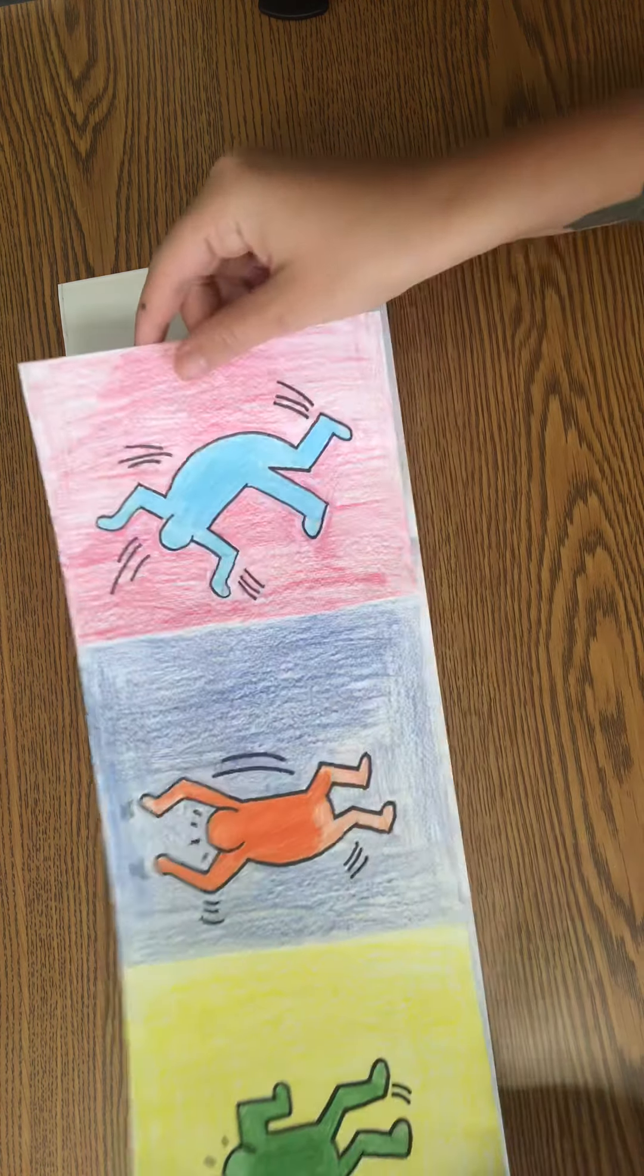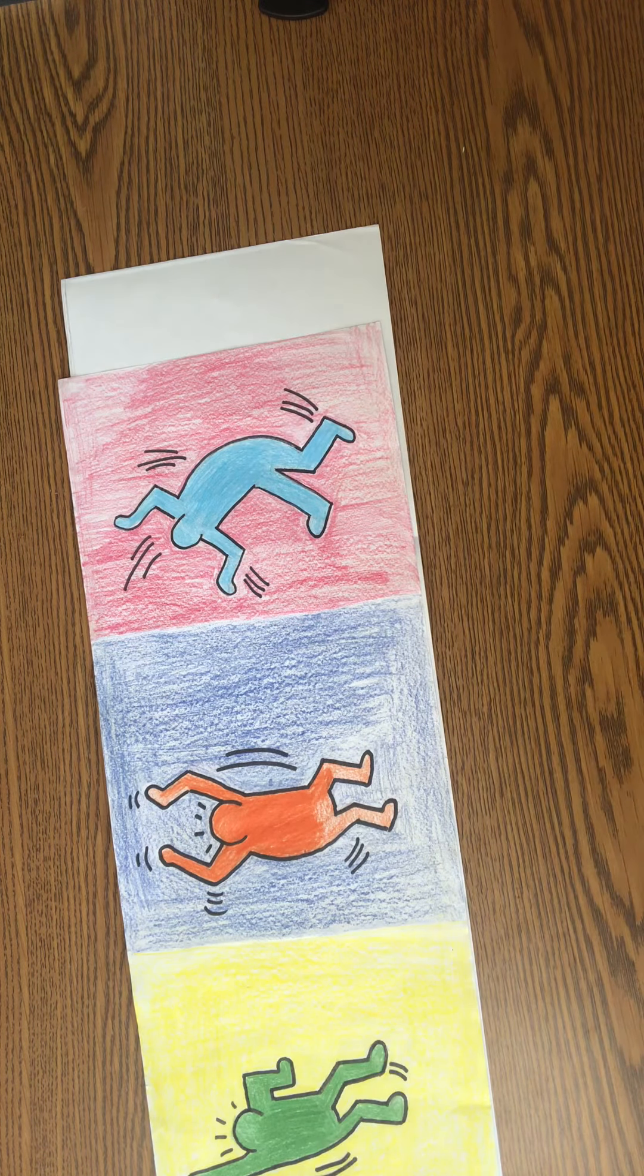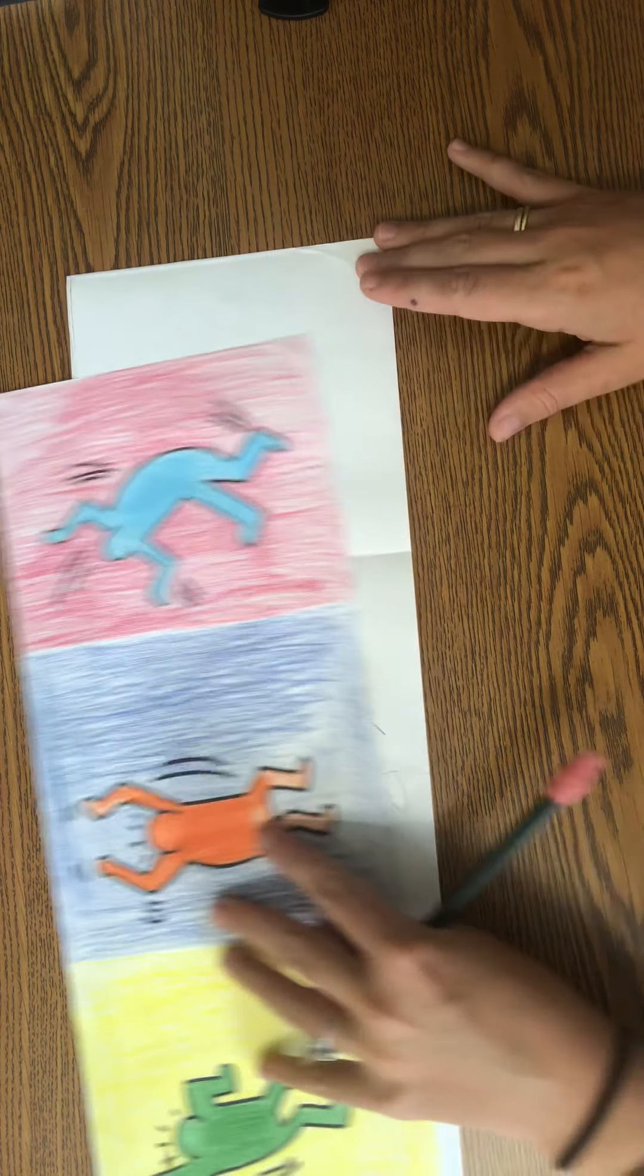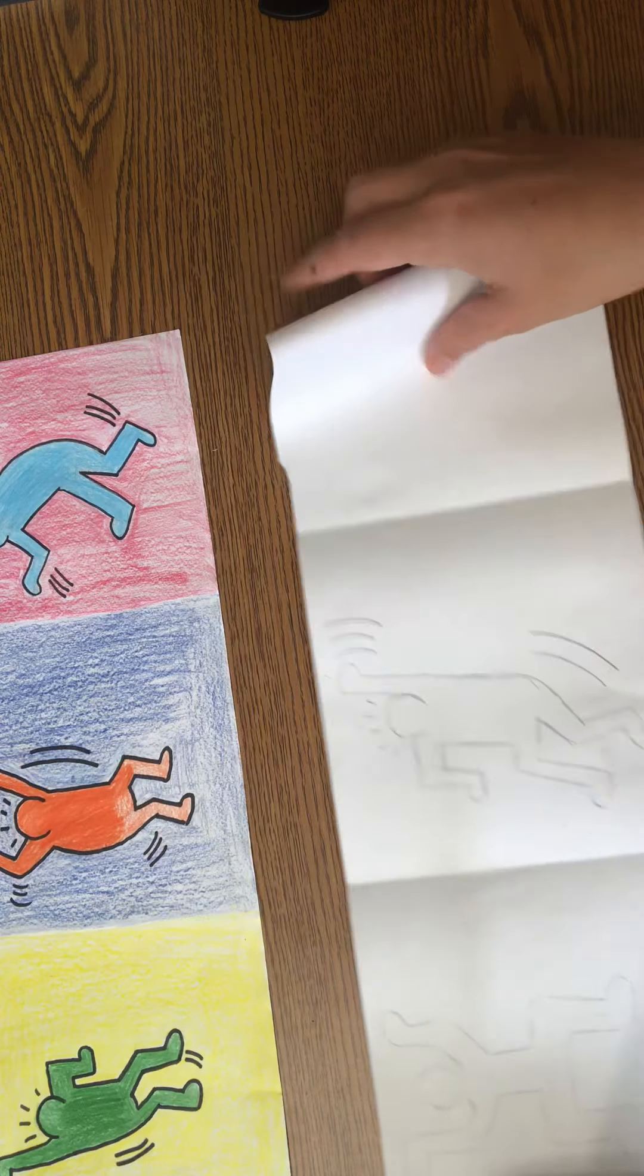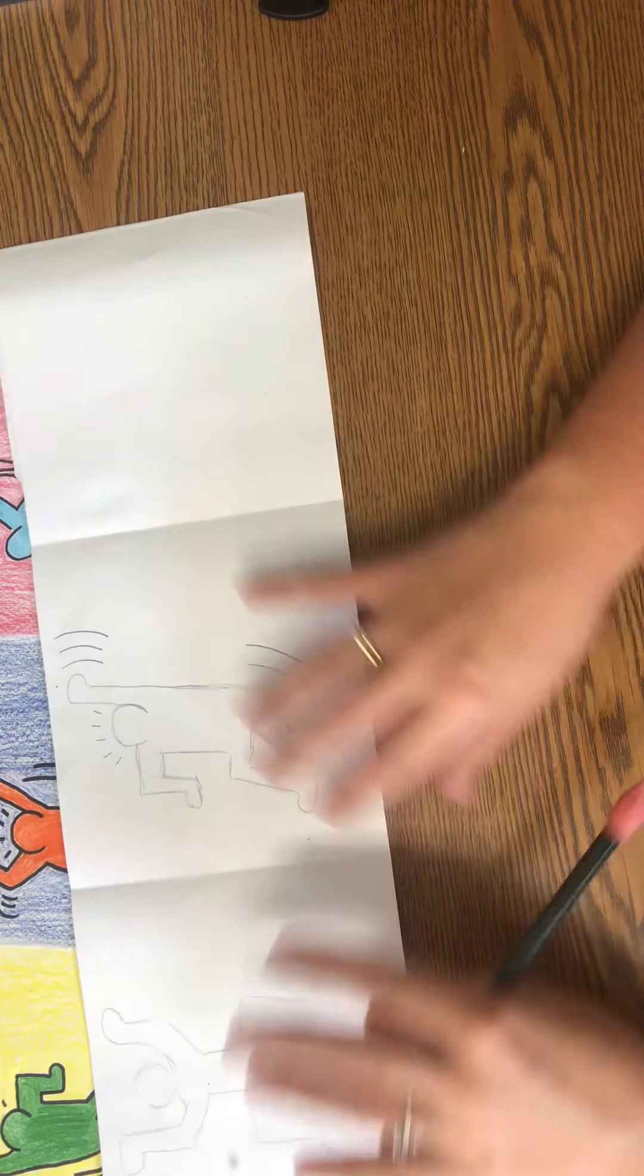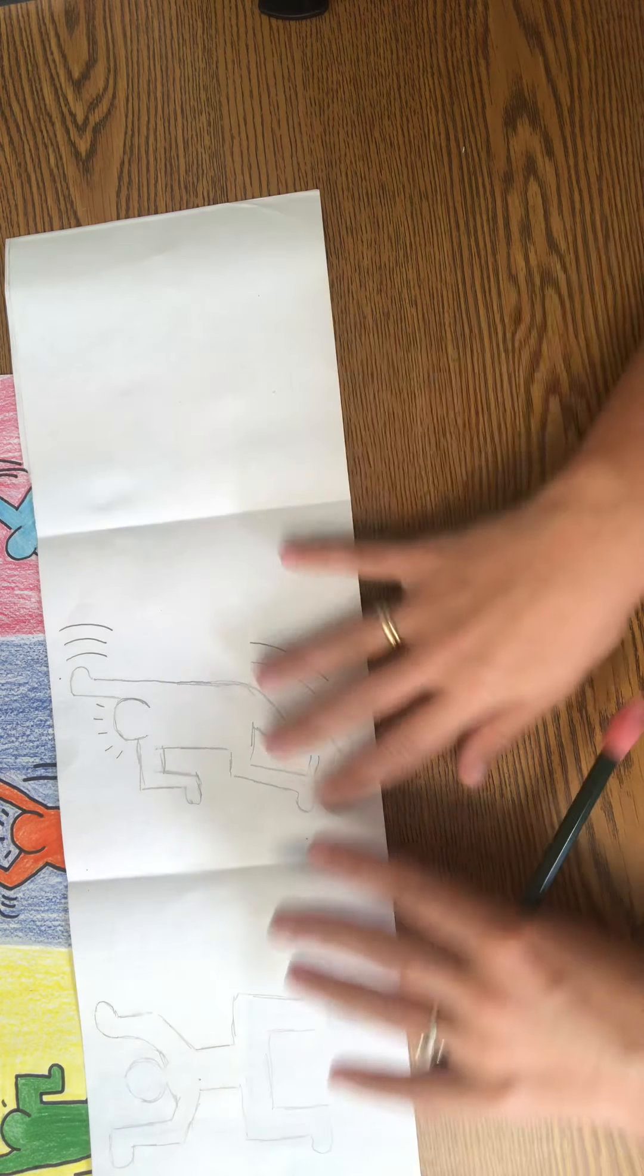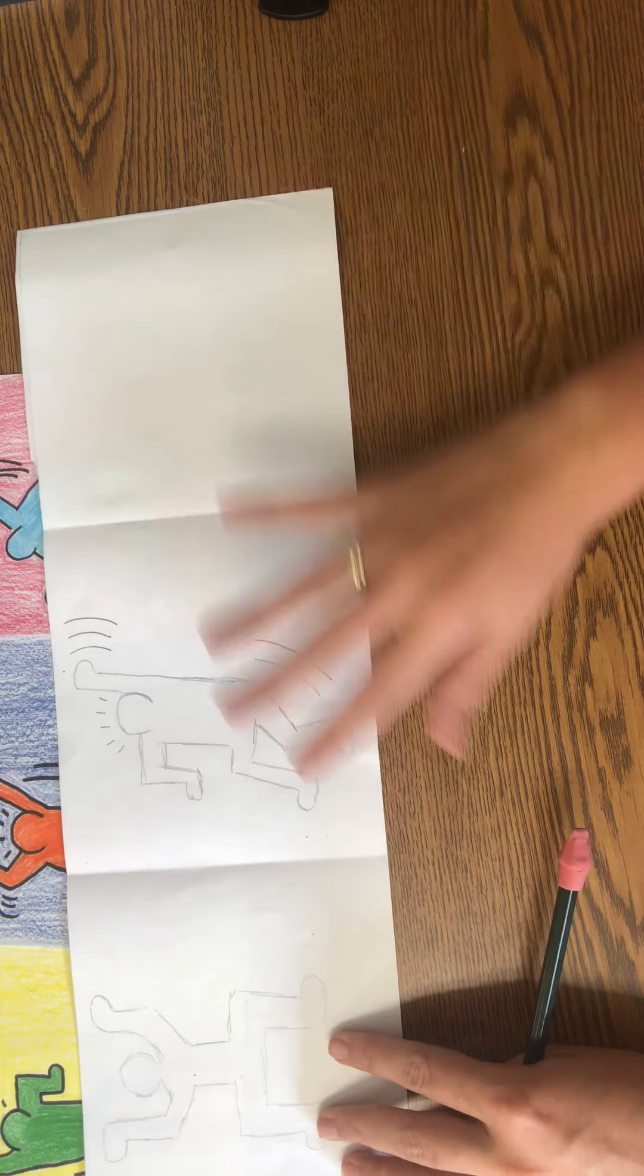In the next video we're going to talk about adding color so that we can have a final result. Now remember draw light so you can erase and take your time. If you need to practice first you can have a sloppy copy and then do a final copy as well.